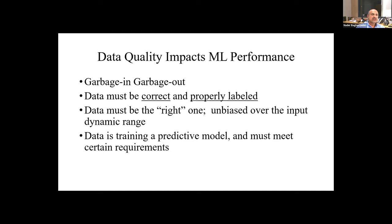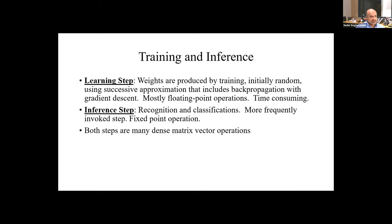Training is a very important IP. A lot of companies will not share their training data sets because it really helps train the machine learning algorithms. There are two steps: the learning step, where you produce the weights for the model, and inference. The notion of backpropagation was introduced — an amazing contribution by Hinton and his collaborators — meaning that the weights, after the first iteration, you go back and update them using some sort of approximate successive computation.